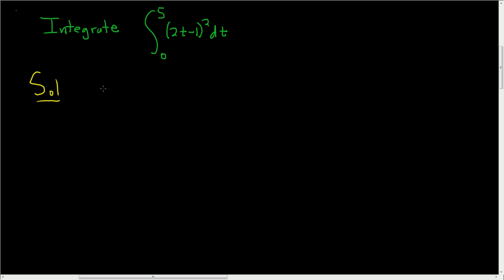First thing you want to do is make a u substitution. So we'll let u equal 2t minus 1. The reason we picked this as our u is because that's what's being raised to a power. We have this thing to the second power.